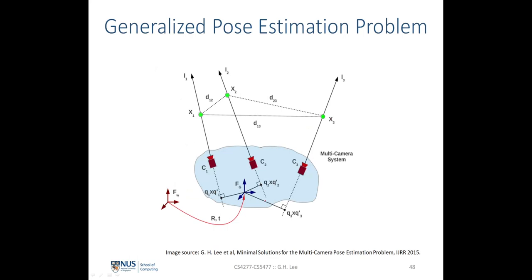Here is an image illustrating the generalized pose estimation problem. We are given three 3D points X1, X2, and X3 in the world coordinate frame FW, and the corresponding image points X1, X2, and X3. These image coordinates X1, X2, X3 are defined locally with respect to the camera frame.